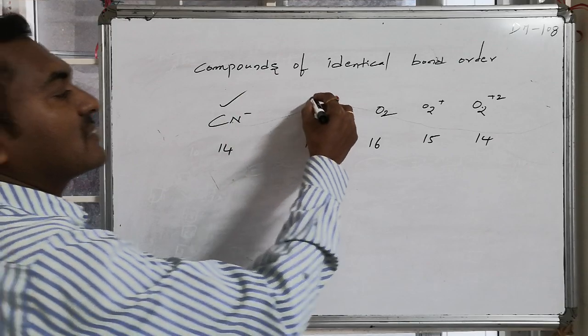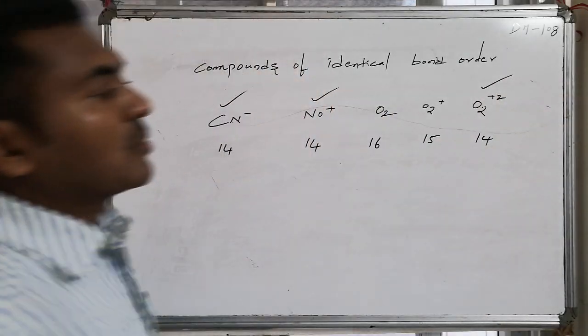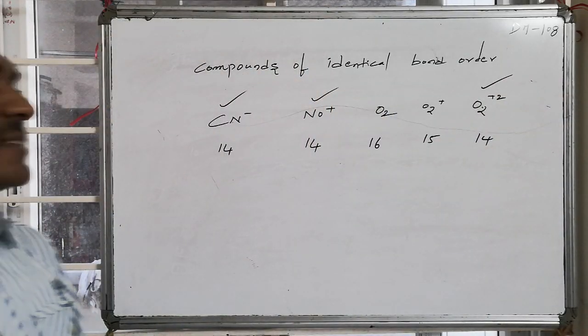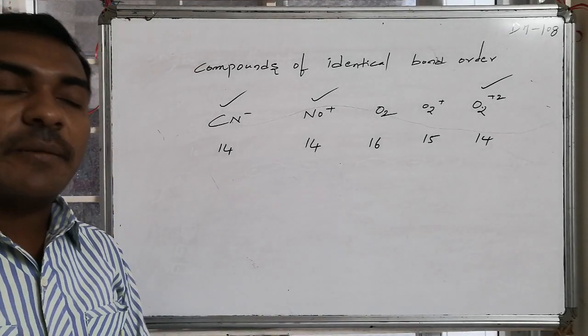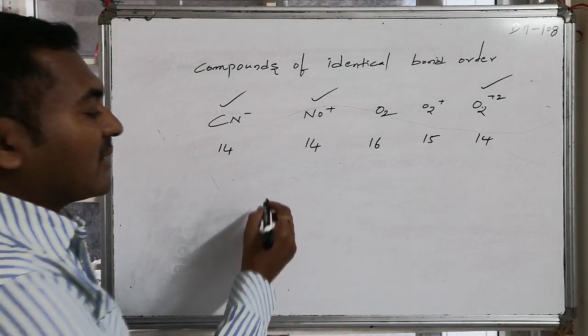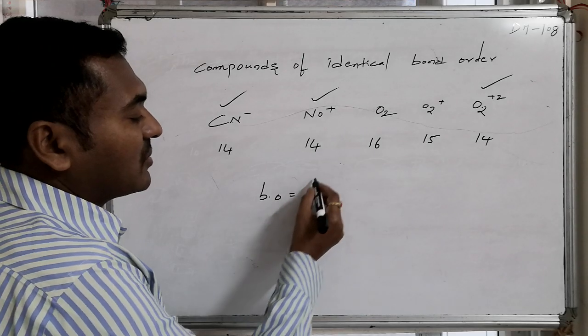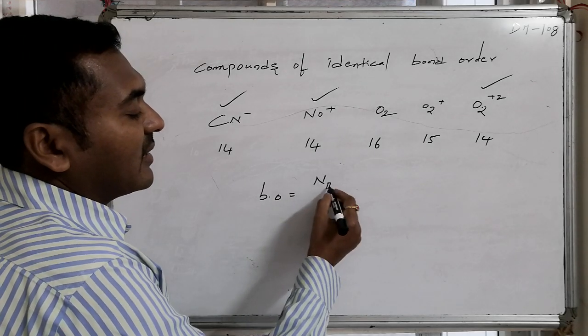That is CN minus, NO plus, followed by O2 plus 2, these three species are having same number of electrons, implies they maintain same bond order. And the bond order becomes equal to number of bonding electrons minus number of anti-bonding electrons.